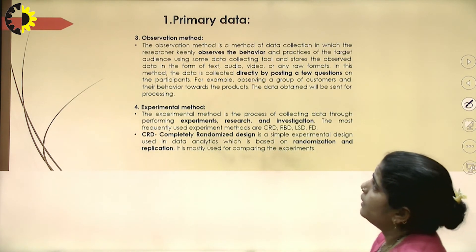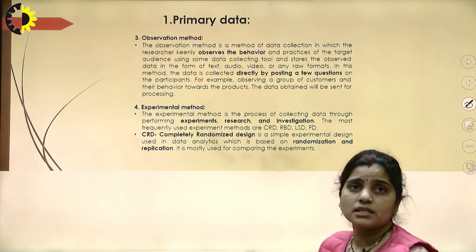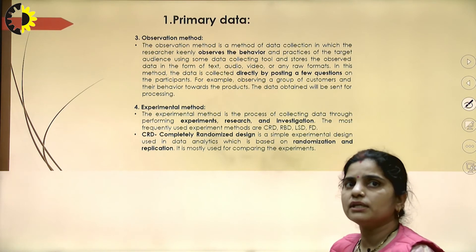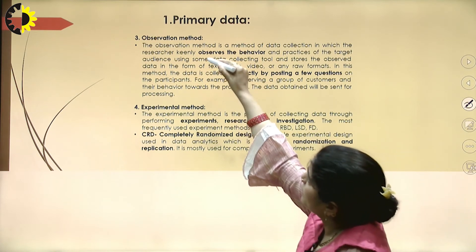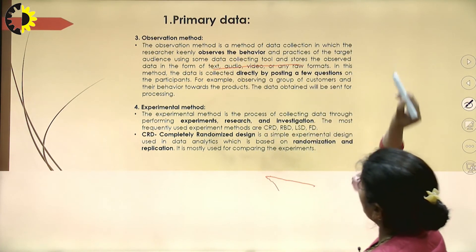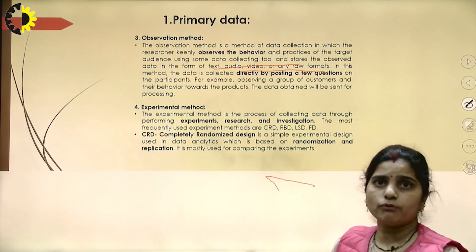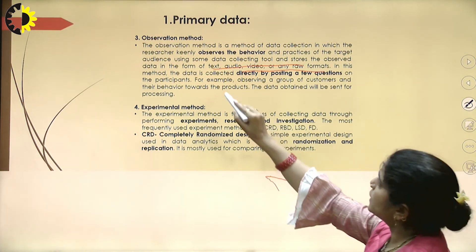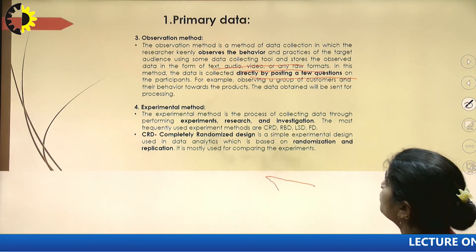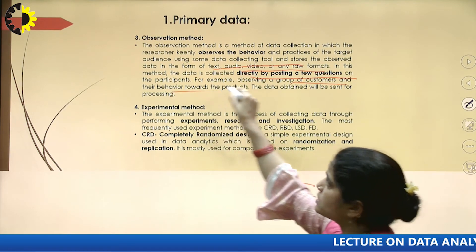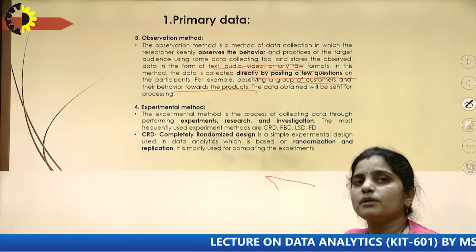The next one is the observation method. In this method, the researcher keenly observes the behavior and practices of the target audience using some data-collecting tools, and then stores the observed data in the form of text, audio, video, or any other raw formats. The data is collected directly by posting a few questions to participants. For example, if you are observing a group of customers and their behaviors towards a particular product, the data obtained will be sent further for processing or future prediction.